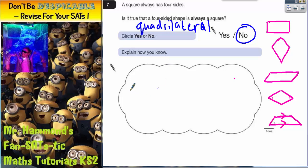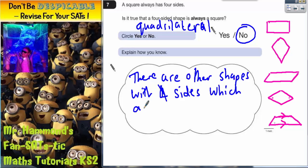Explain how you know. So you need to say, there are other shapes with four sides which are not squares.